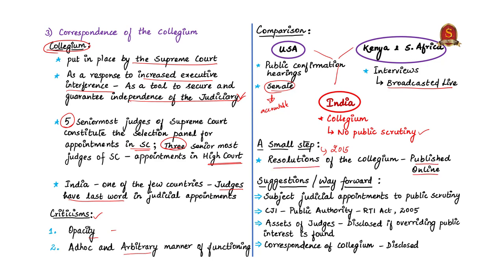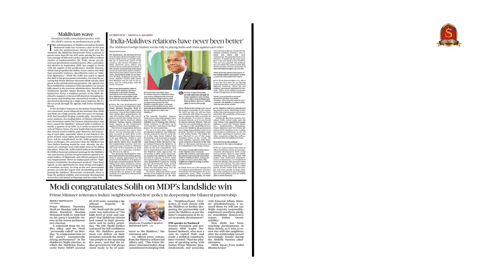Overall, the author suggests the following as a way forward: judicial appointments should be subjected to public scrutiny; the Chief Justice of India shall be a public authority under the RTI Act 2005; the assets of judges shall be disclosed if overriding public interest is found and is arguably justified; and the correspondence of the collegium shall be disclosed, thus making the Supreme Court open to safeguard impartiality, independence, and public faith in the judicial institution.